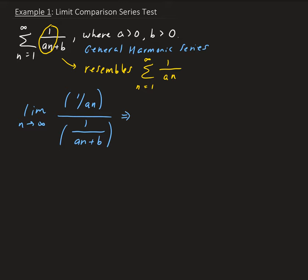Now we're going to go ahead and simplify this. It doesn't matter the order — we could have put 1 over (an plus b) on top, and 1 over an on the bottom. Taking the limit as n approaches infinity, we take the reciprocal of the denominator, giving us (a sub n plus b) all over (a times n).